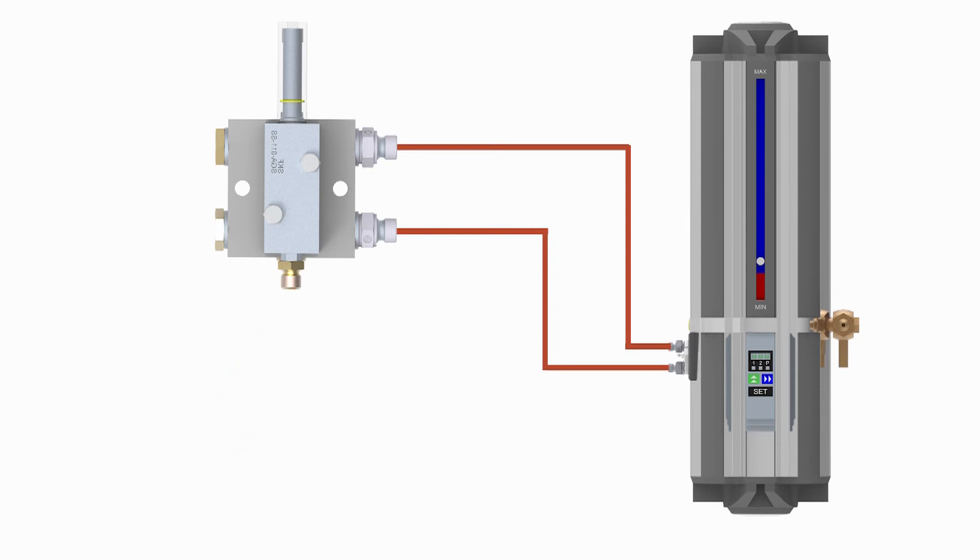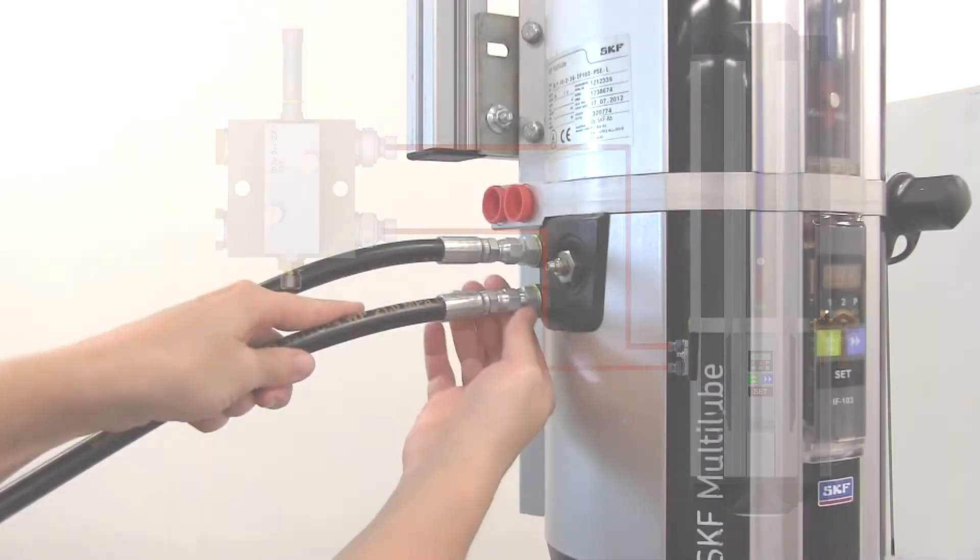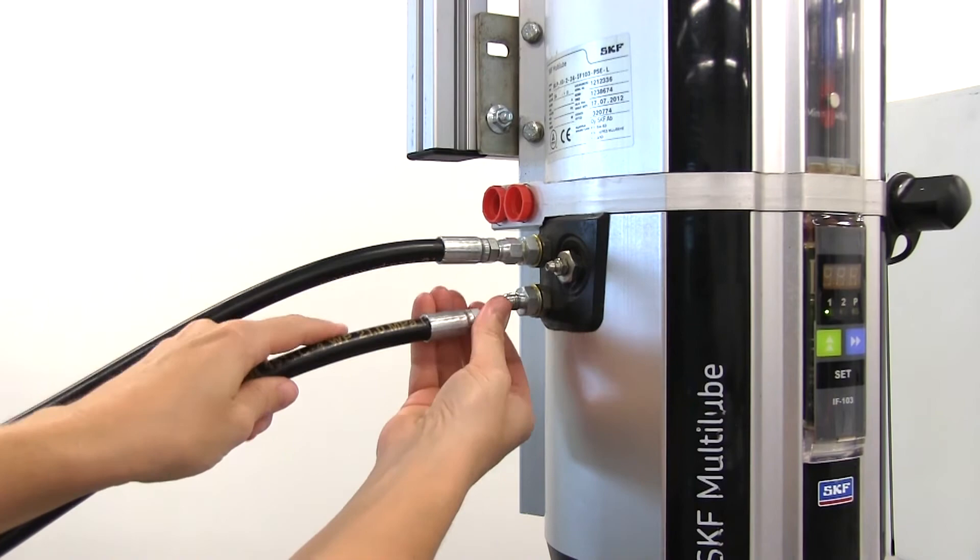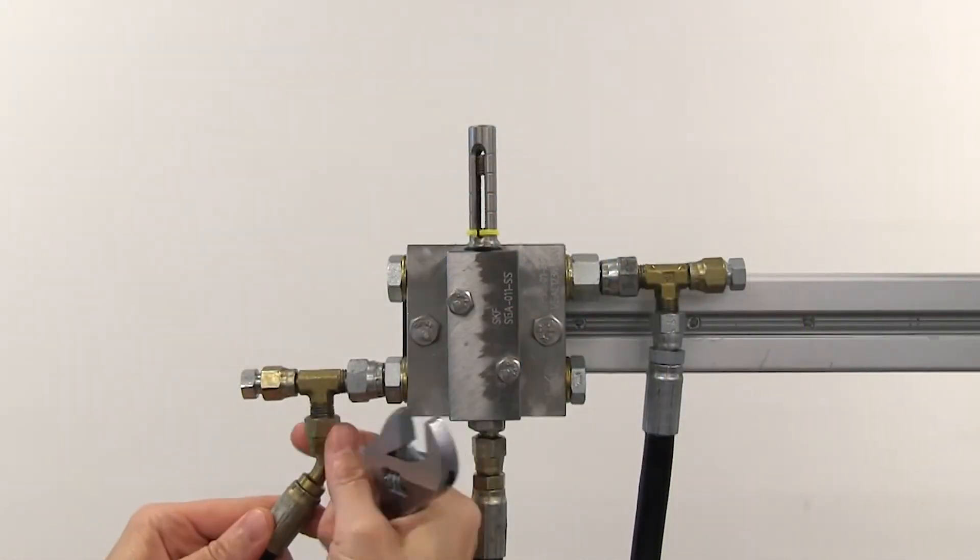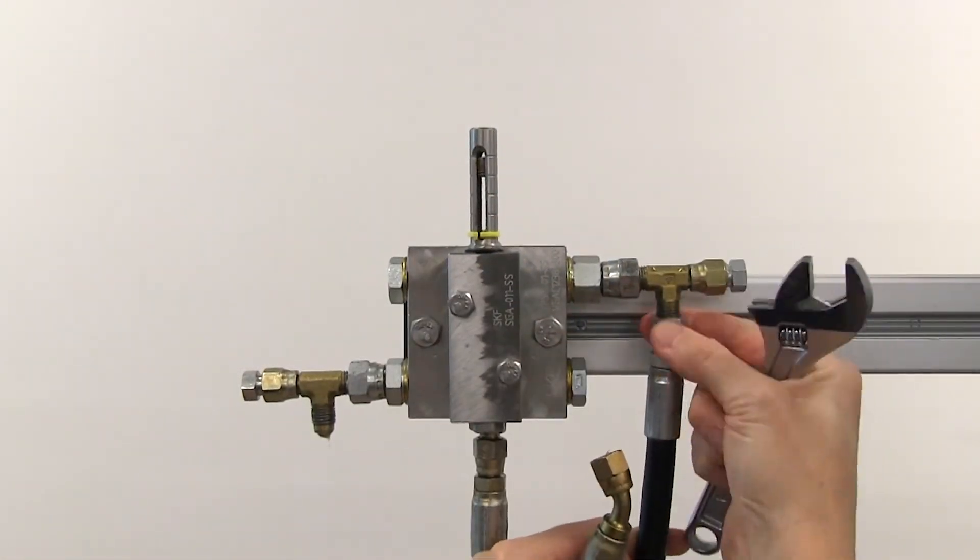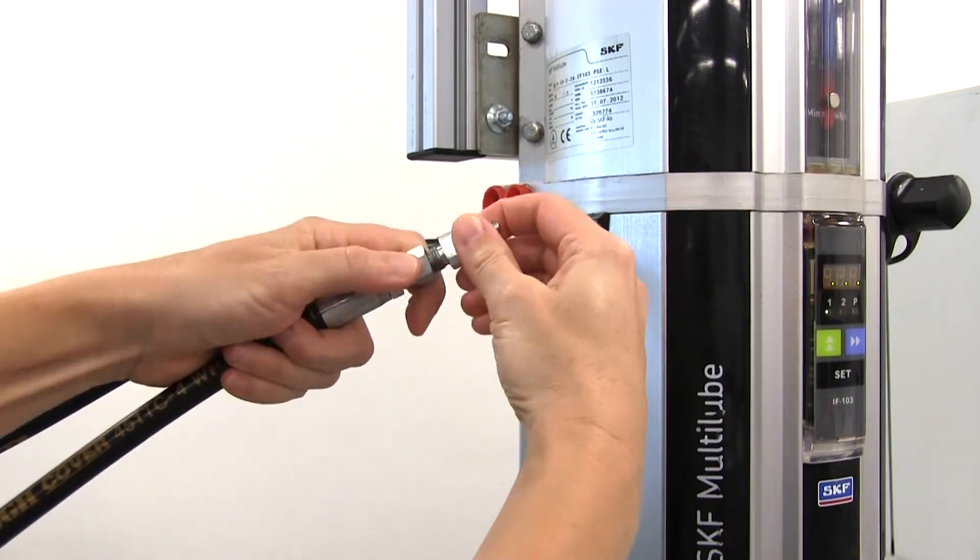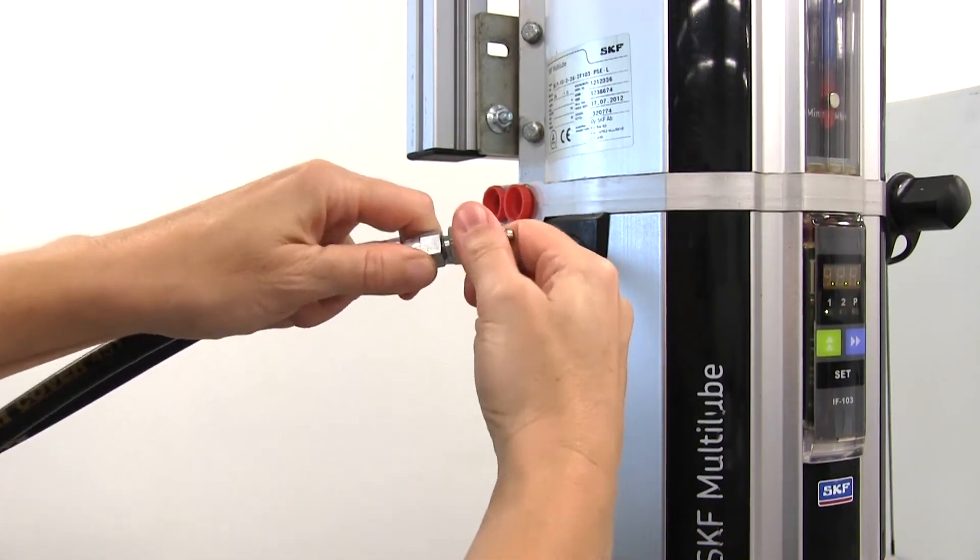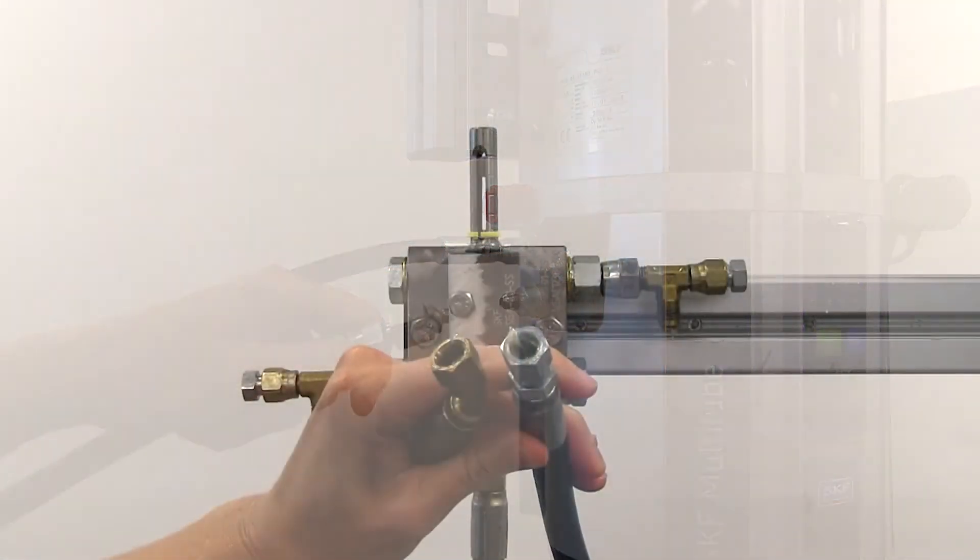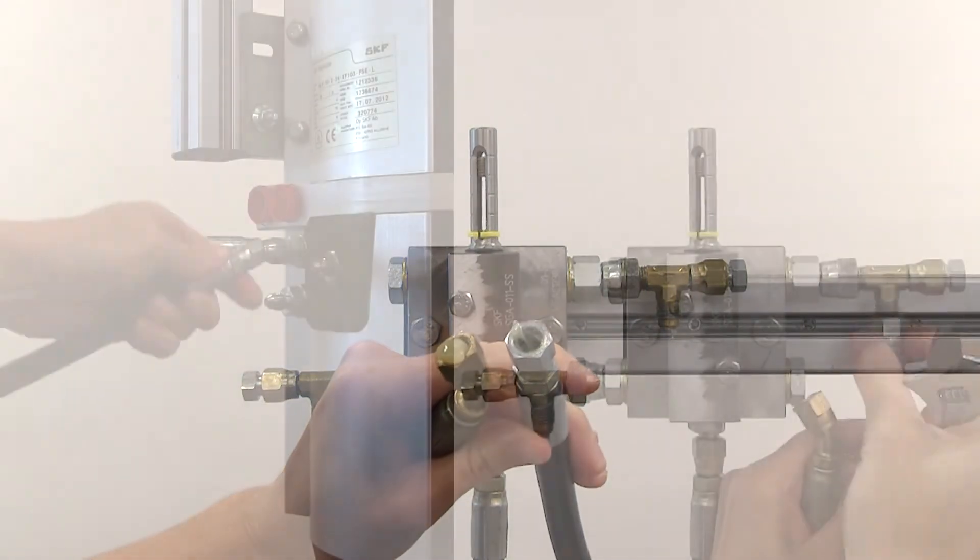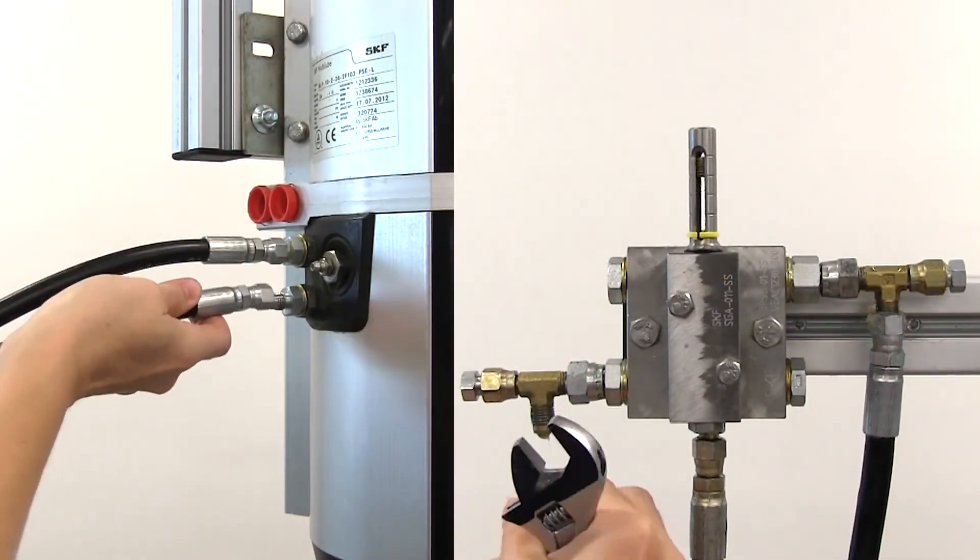To fill the lines between the control unit and the doser, disconnect the outlet lines from the control unit and disconnect the inlet lines to the doser. Attach a grease fitting to the outlet lines from the control unit and pump until grease comes out the other end, which is the inlet to the doser. Then reconnect the piping.